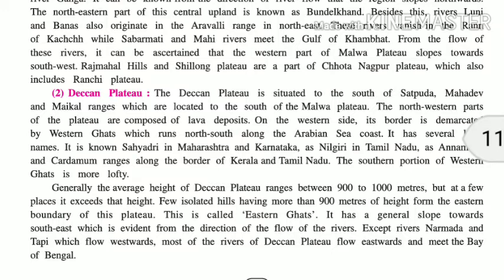The eastern boundary is called the Eastern Ghats. It has a general slope towards the south-east, which is evident from the direction of river flow. Except for the Narmada and Tapti rivers which flow westwards, most rivers of the Deccan Plateau flow eastwards and meet the Bay of Bengal.